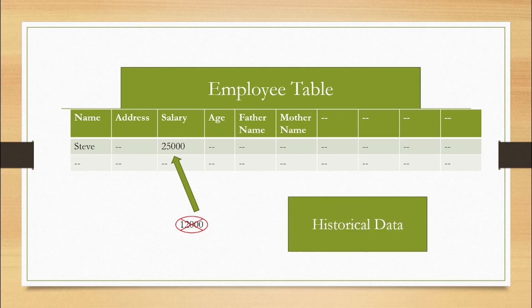The last property is that the data has to be time-variant, meaning it has to be historical data. The reason we use a data warehouse is because we need to analyze the data and find important insights from it. For that reason we need historical data — by analyzing historical data we can easily find many kinds of information which may help for the future.